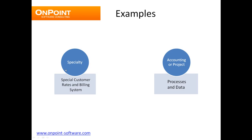In this first example, our specialty system is a very unique customer rate and billing system that handles billings to your customers that are very special and unique — in other words, not handled by your accounting or project system. So in this example, we've got a specialty system where those receivables have to move into your back-end system. In another example, maybe you've got many contractors in a multi-tier situation working on a very large project, and you need to get their change management data into one place so that you can do forecasting reports for your upstream owner.